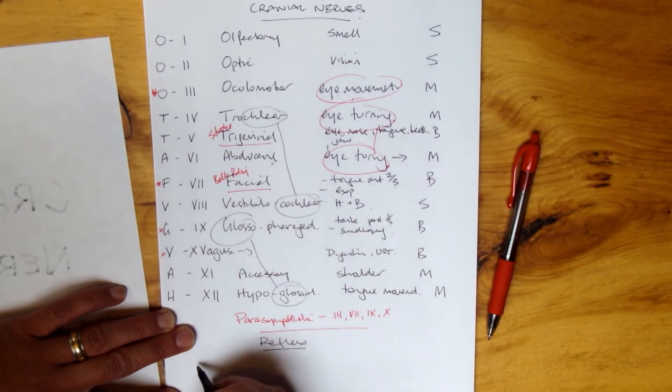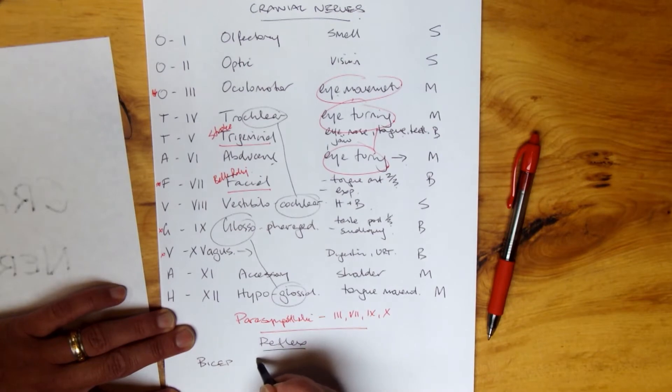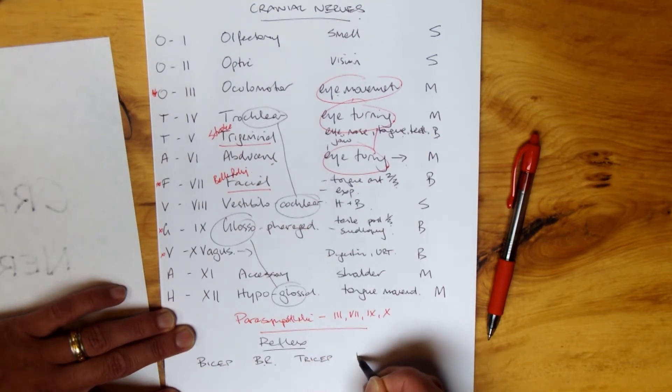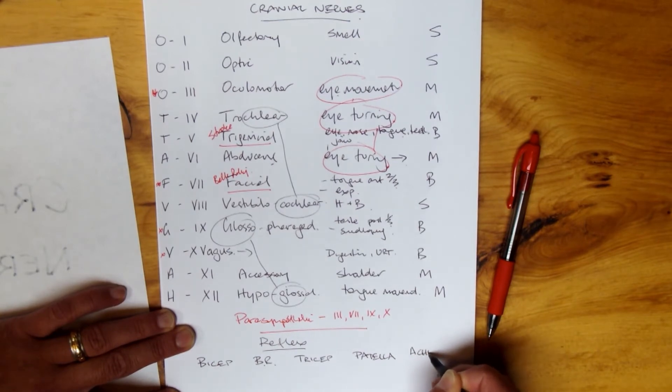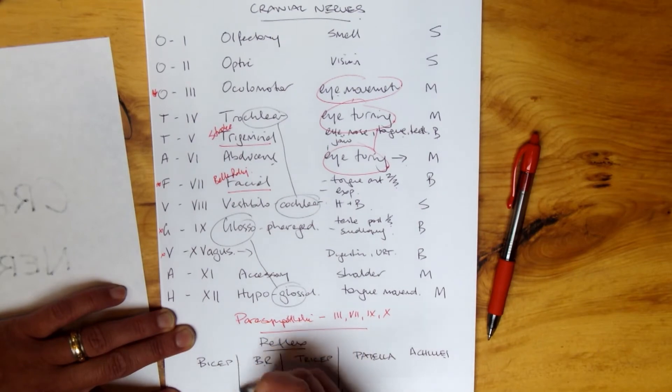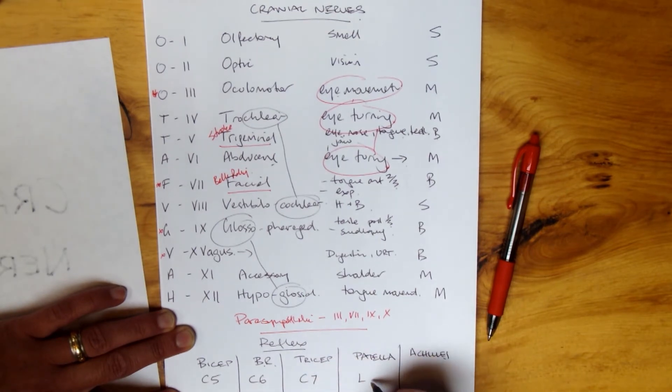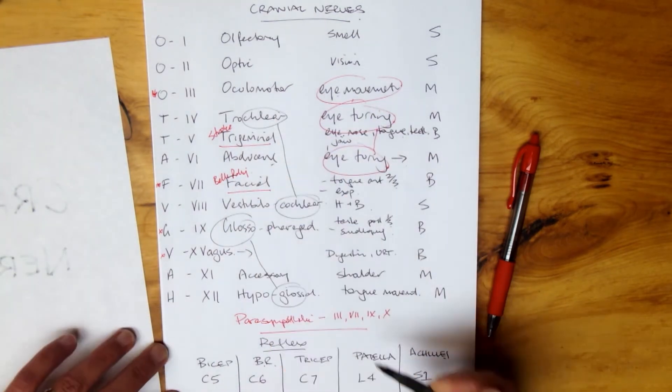So reflex, think about bicep, brachioradialis, I put BR to be a word, tricep, bicep, patella, we go to the lower body, knee, and then the Achilles. Classic. These are all the big bicep reflex tendon type of questions that we get. C5, C6, C7, L4, and S1.